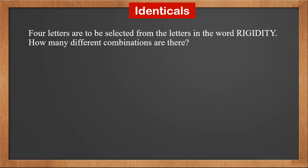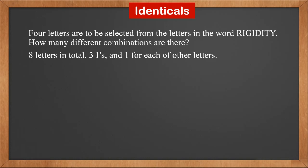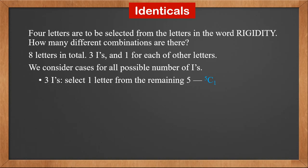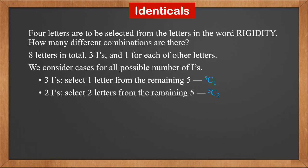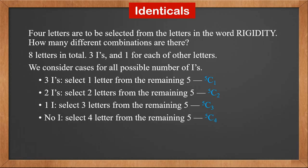Four letters are to be selected from the letters in the word RIGIDITY. How many different combinations are there? There are 8 letters in total; the 3 I's are identical, and there is one of each other letter. To solve this, we consider cases for all possible numbers of I's. When all 3 I's are selected, we need 1 more from the remaining 5 — this is 5C1. When 2 I's are selected, we need 2 more from the remaining 5 — this is 5C2. When 1 I is selected, we need 3 more from the remaining 5 — this is 5C3. When no I's are selected, we select all 4 letters from the remaining 5 — this is 5C4. The answer is the sum of all 4 cases, and the result is 30.